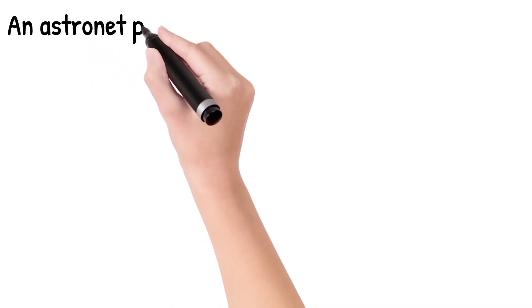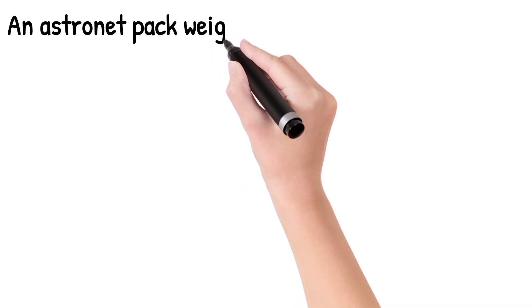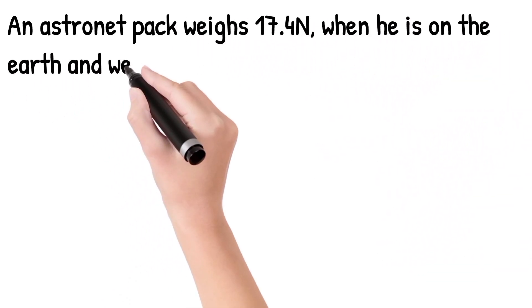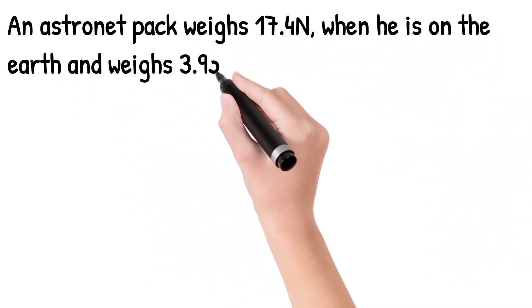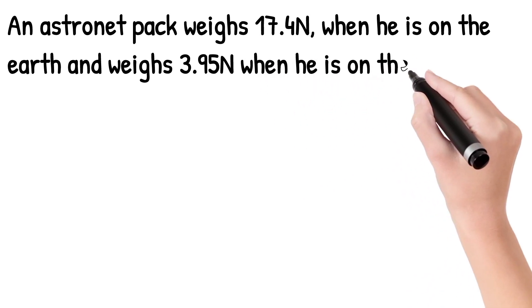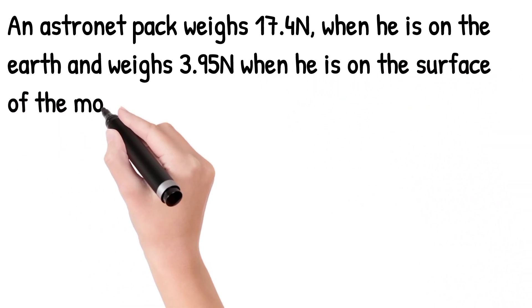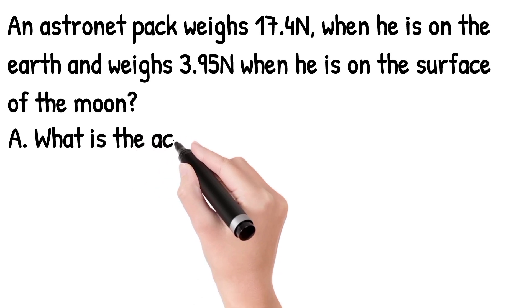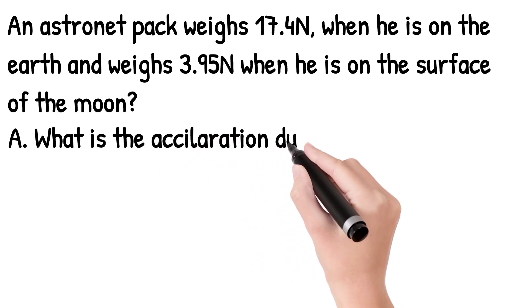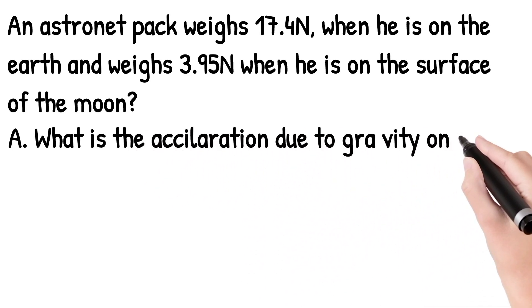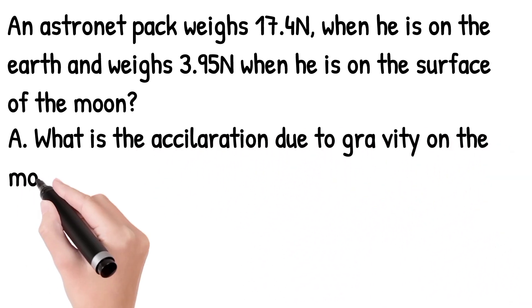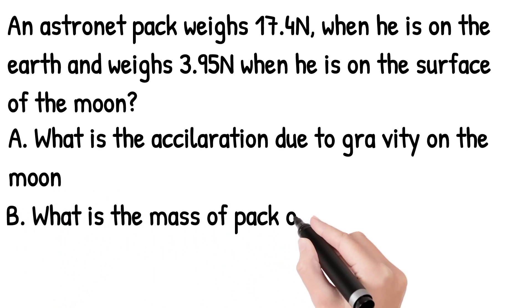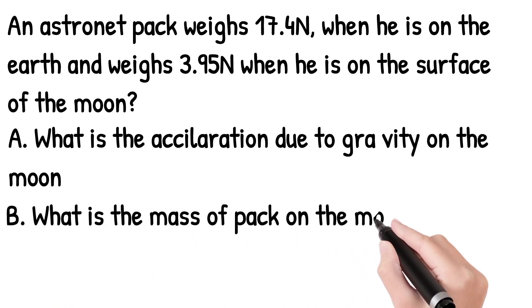An astronaut weighs 174 Newton when he is on the Earth and weighs 3.95 Newton when he is on the surface of the moon. Question A: what is the acceleration due to gravity of the moon? Question B: what is the mass of the astronaut on the moon?